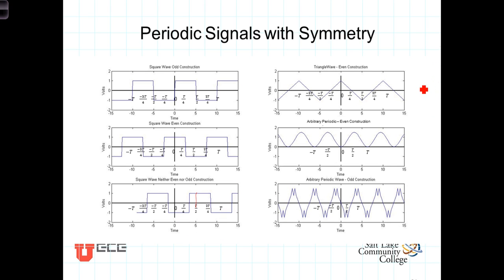Here's a triangle-shaped wave constructed with even symmetry, symmetrical about the y-axis. Here's an arbitrary waveform with even symmetry. And here's the waveform we were looking at before — constructed with odd symmetry. It also has half-wave symmetry and quarter-wave symmetry.